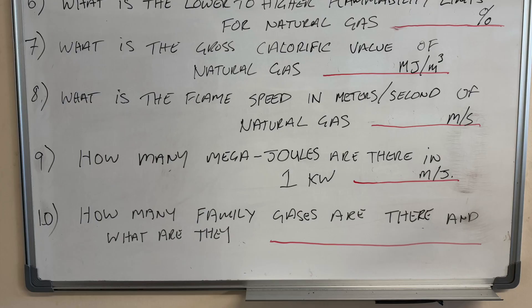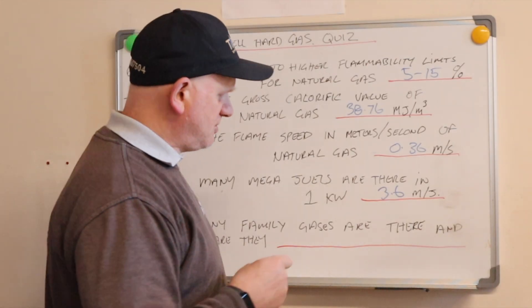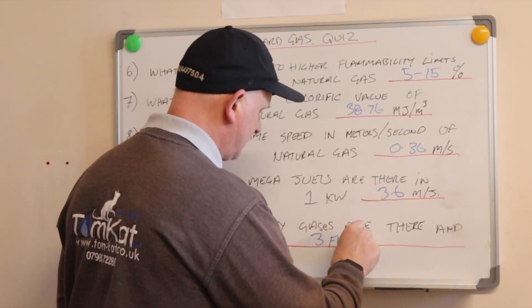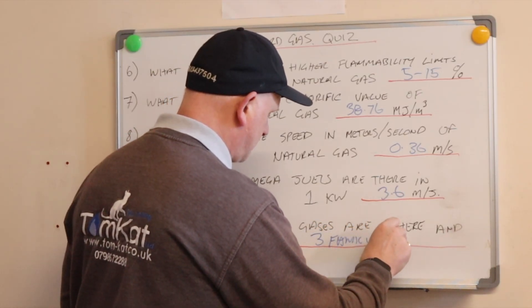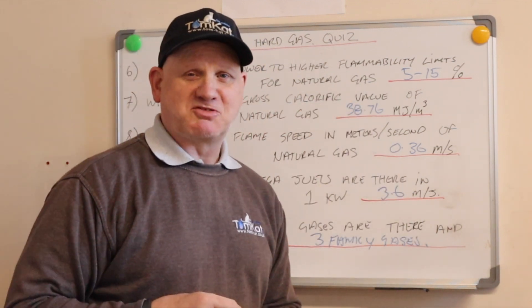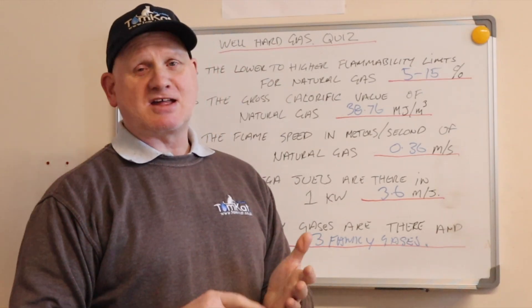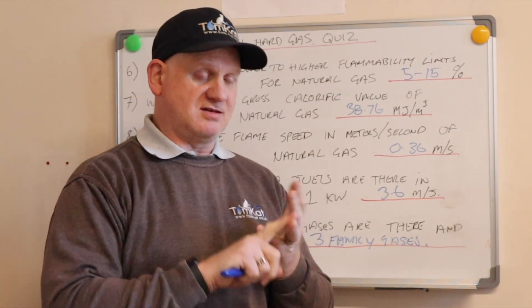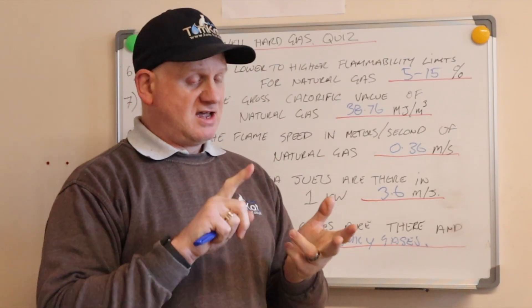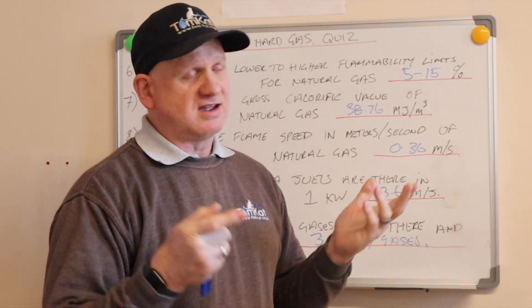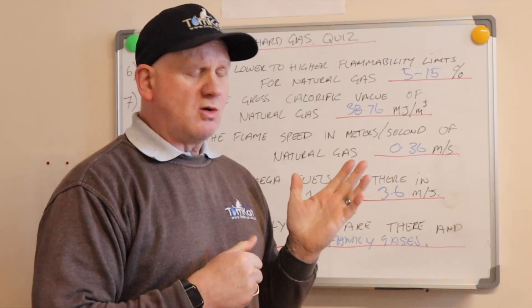Question number ten: how many family gases are there and what are they? There are three family gases. Family gas number one is towns gas or man-made gas, number two is natural gas, and family gas number three is liquefied petroleum gas or LPG.